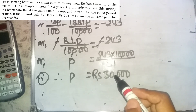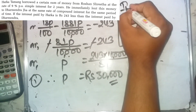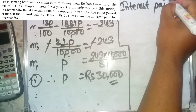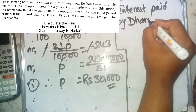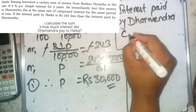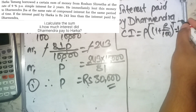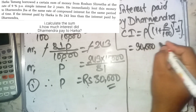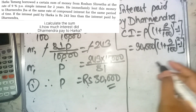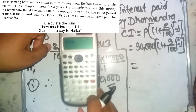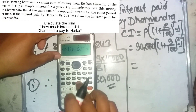Now, how much interest did Dharmendra pay? Interest paid by Dharmendra: CI equals P × (1 + r/100)^t − 1, at rate 9% and the given time period.